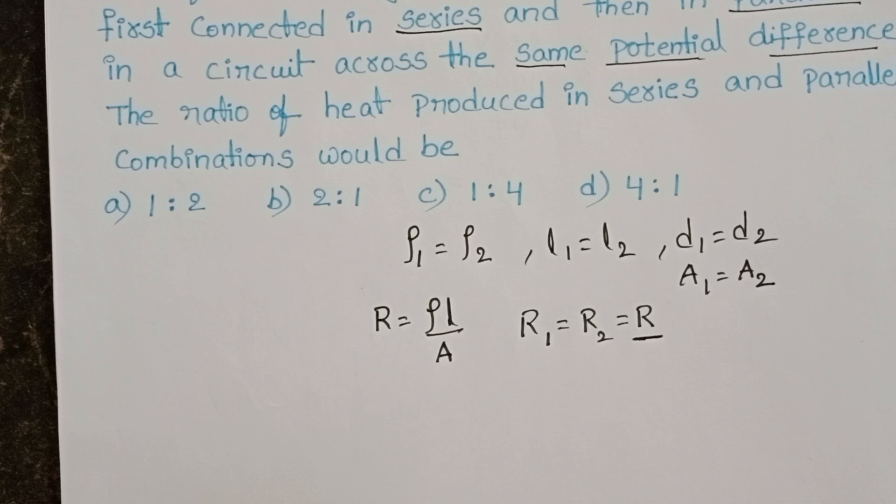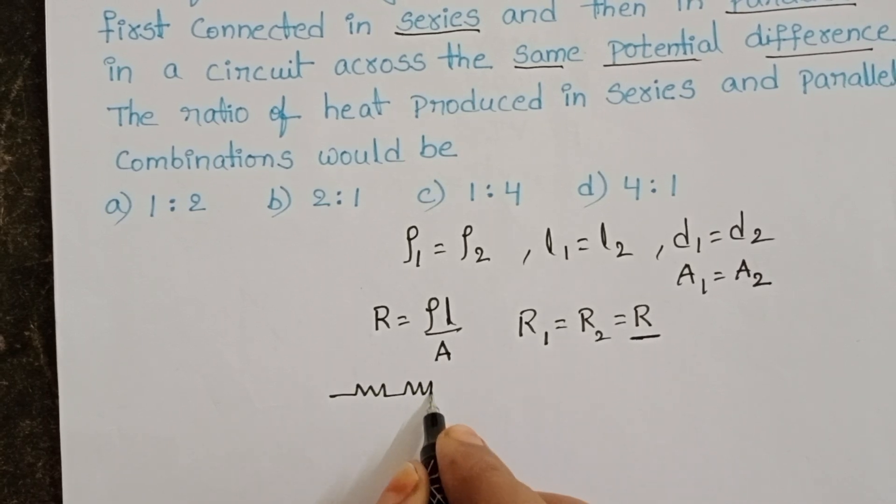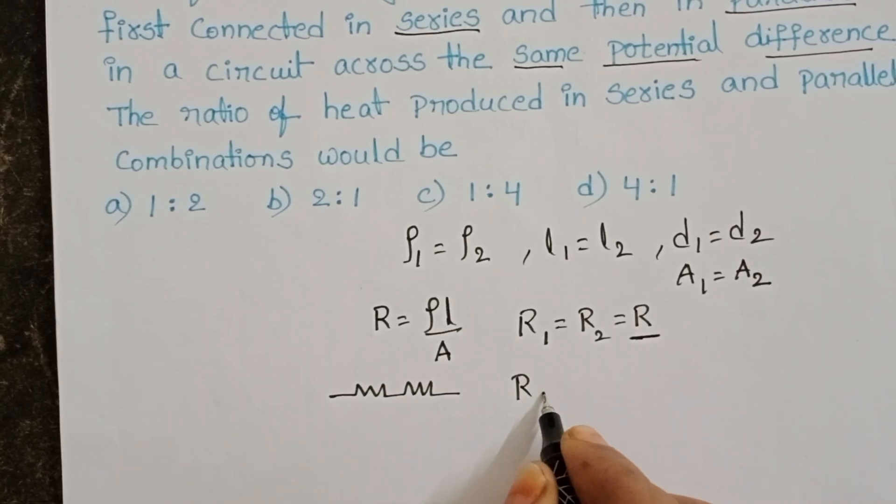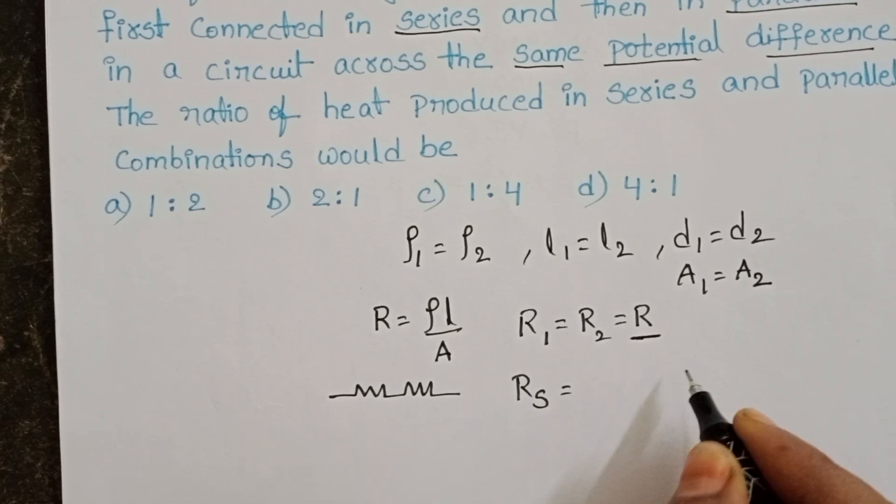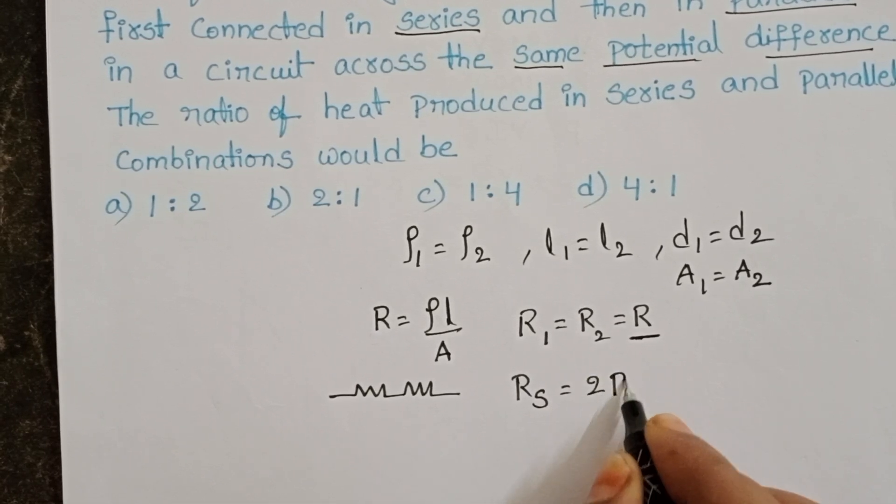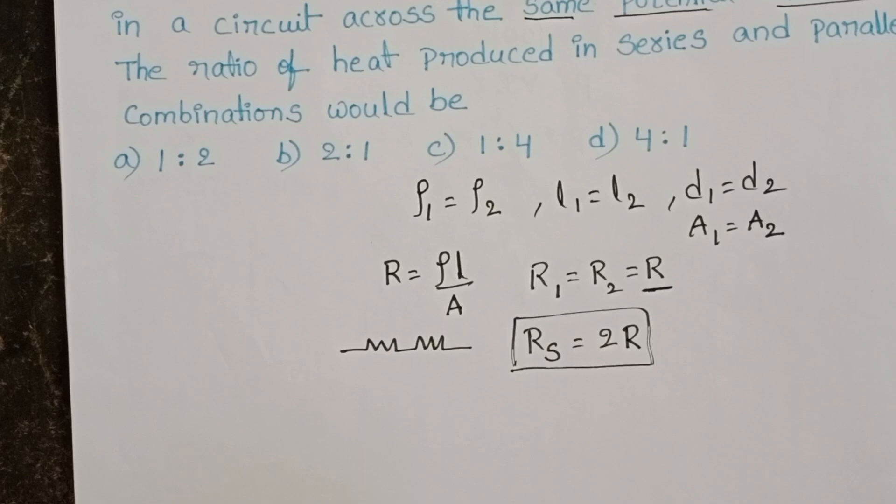First of all, these two resistors are connected in series. Then equivalent resistance becomes R1 plus R2. R1 plus R2 equals 2R.